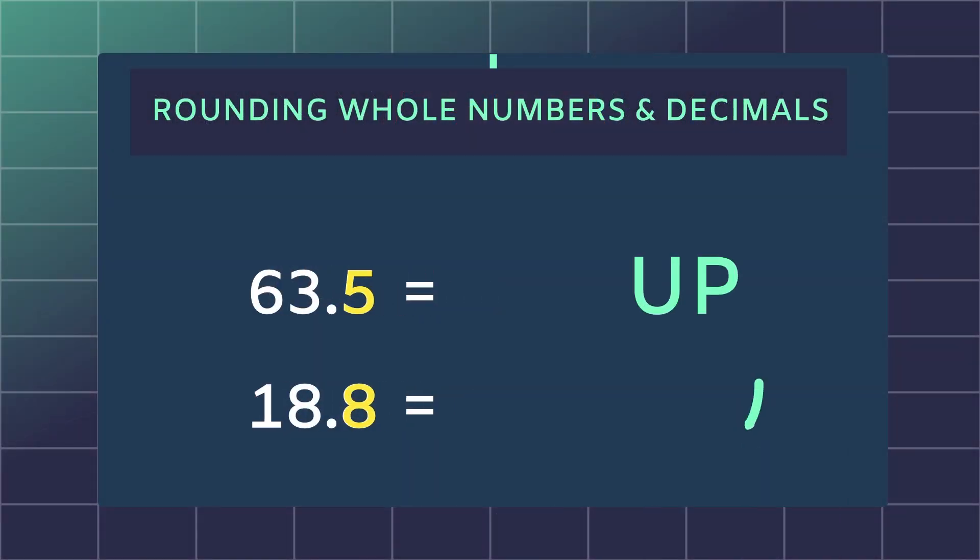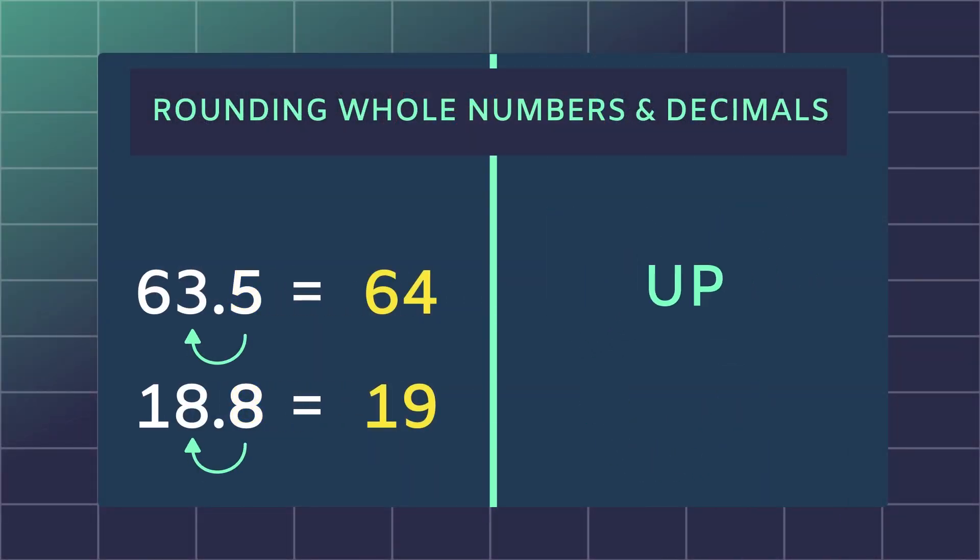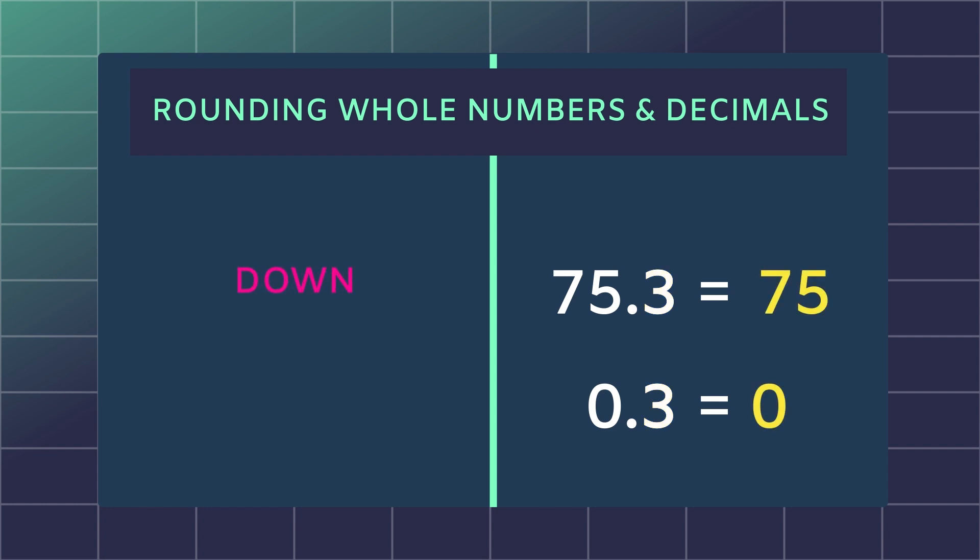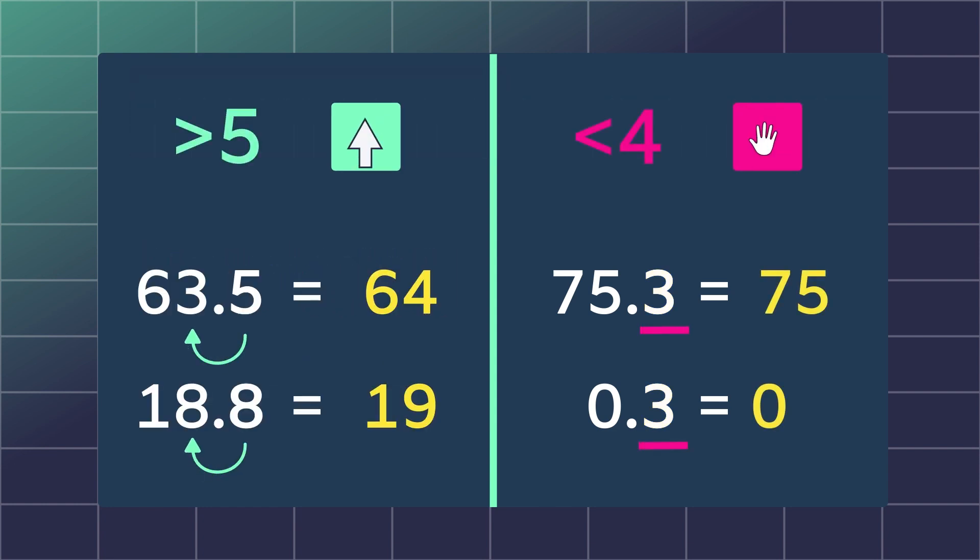If your number ends in a 5 or more, you'll round up. If your number ends in a 4 or less, you'll round down. This rule applies to both whole numbers and decimals, and the place value to be rounded.